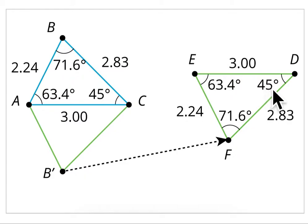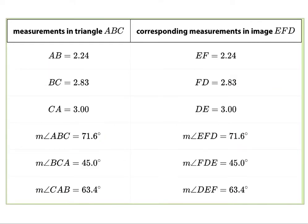The lengths of the sides remain the same. They put together a table showing you that all the measurements for triangle ABC match all the measurements of the corresponding measurements for triangle EFD. They all match.